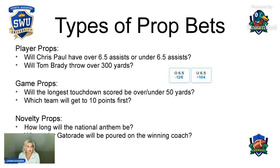So, what are the different types of prop bets? You have player props, game props, novelty props. Taking a look at player props, this all has to do with how an individual performs in a game. In the NBA, Chris Paul — will he have over 6.5 assists or under 6.5 assists? If you think he's going to go over that number, obviously you would take the over. In the NFL, a quarterback's passing yards — will Tom Brady throw for over 300 yards? If you think he's going to go over, you'd take the over. If you think he'll stay under that number, you'd obviously take the under.